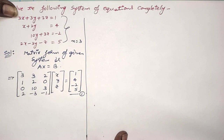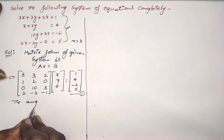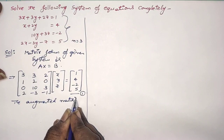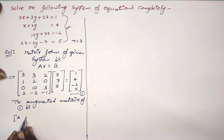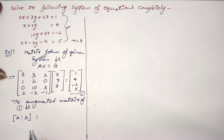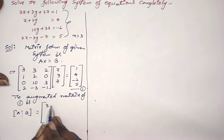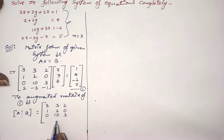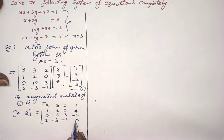Immediately, we have to write the augmented matrix of this system. The augmented matrix of the given system is represented by [A | B]. So first write A: 3, 3, 2 / 1, 2, 0 / 0, 10, 3 / and the final row is 2, minus 3, minus 1. Then write B as the last column: 1, 4, minus 2, 5. Separate A and B with dots.